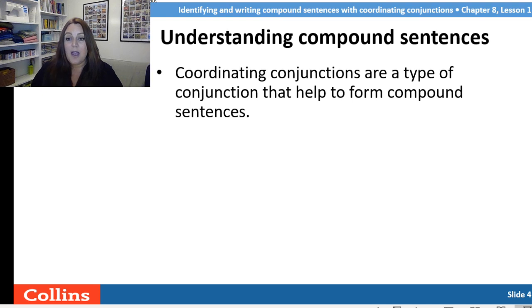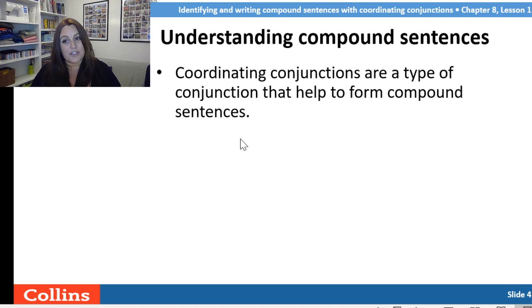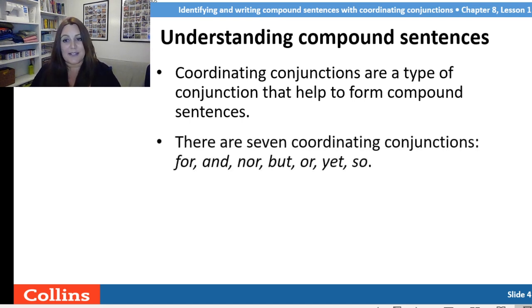Some students remember they've got to put some clauses in so they start using complex sentences, but we miss out on these compound sentences, which I think are really useful. So let's have a look and check that we're really happy with what a compound sentence is. Coordinating conjunctions are types of conjunctions that help to form compound sentences. There are seven coordinating conjunctions.